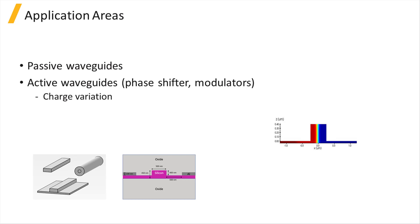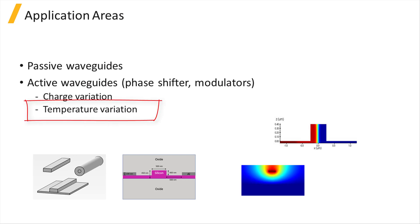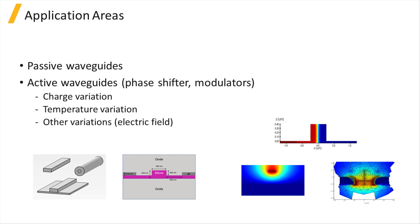This includes electro-optic modulators where variations in the charge distribution are responsible for refractive index perturbations, thermo-optic phase modulators where the index perturbation comes from variation in the waveguide temperature, or other types of optical modulators, for example those where the refractive index is affected by an applied electric field through the Franz-Keldisch effect.